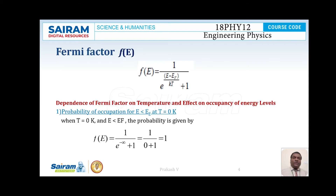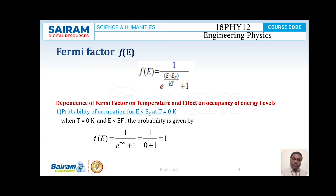Now I am going to explain what is Fermi factor F(E). The Fermi factor is given by the expression: F(E) = 1 / [e^((E − EF) / KT) + 1]. In this equation, K is Boltzmann's constant, T is the given temperature, E is the energy level chosen, EF is the Fermi energy, and F(E) is the Fermi factor. The Fermi factor can be defined as the Fermi-Dirac distribution function which gives the probability of occupation of an energy state by a free electron at a temperature T.